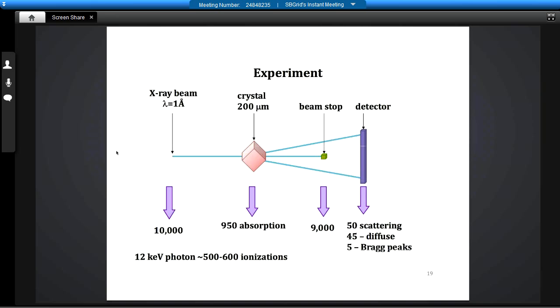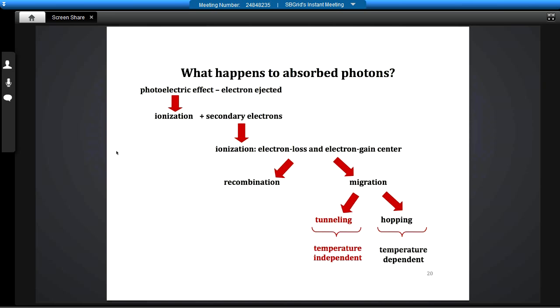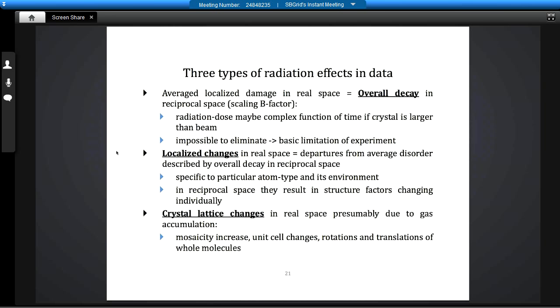I will briefly describe radiation damage, because I actually work on it a lot. Every time when you collect data, per 10,000 photons, only about five goes to the Bragg peak. Most are stopped by the beam stop. However, each photon in cryoprotection generates 500 to 600 ionizations. And this ionization, these so-called photoelectrons, are going through your protein, generating other damage. The type of damage caused by tunneling is temperature-independent. So unfortunately, even in cryoprotection features, you will have changes. And these changes will be specific to some parts of the structure.